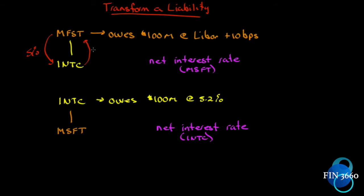Intel agrees to pay Microsoft LIBOR, taking care of the floating rate portion. Microsoft receives LIBOR from Intel and passes it on to cover what it owes. But it's not perfect — Microsoft owes LIBOR plus 10 and is paying 5% to get LIBOR. So Microsoft's net interest rate is 5% plus 10 basis points, which equals 5.1% fixed.